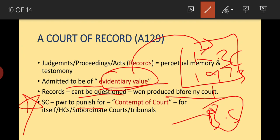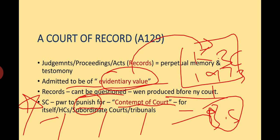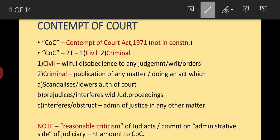Very importantly, the Supreme Court has the power to punish for contempt of court — whether it is the Supreme Court, High Court, subordinate court, or any tribunal. Note that contempt of court is not mentioned in the Constitution; it is mentioned in the Contempt of Court Act, 1971.